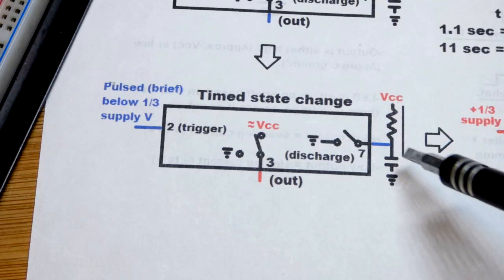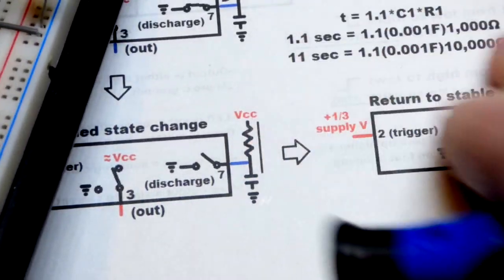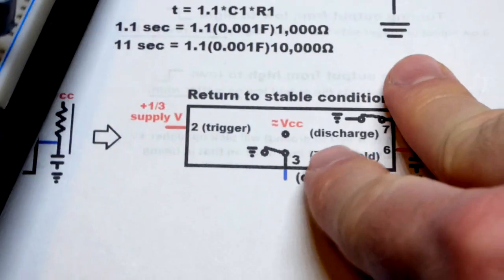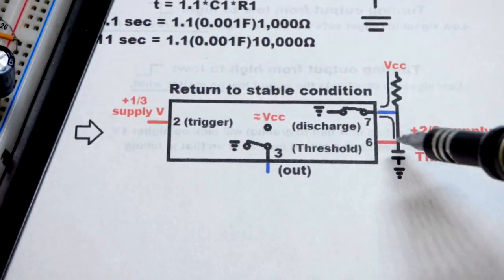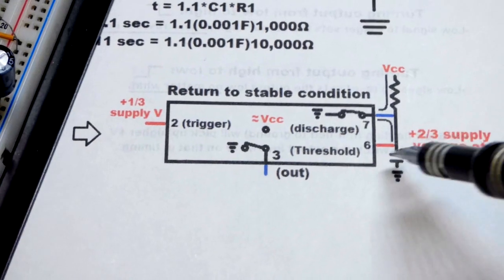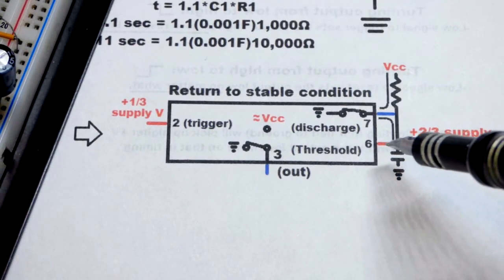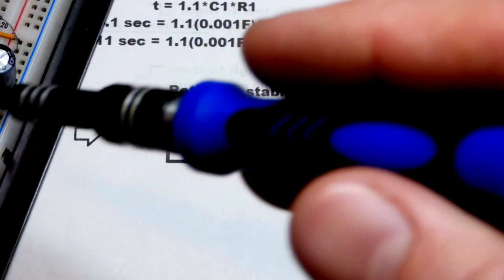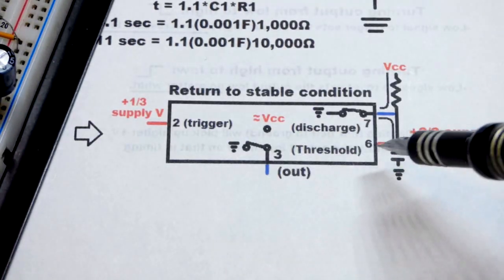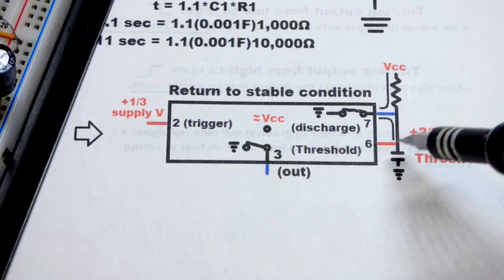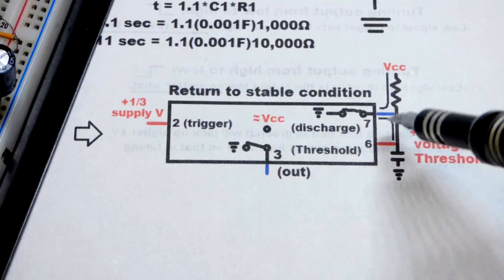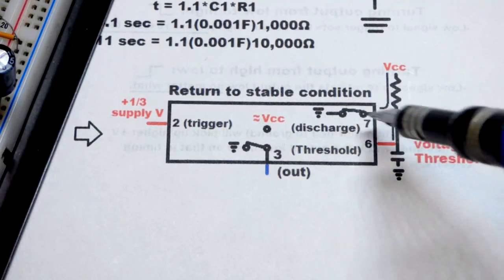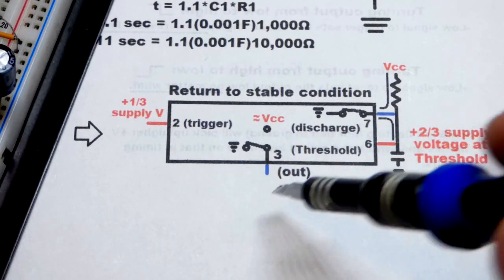Now the capacitor charges and then it charges and charges until we get to this point here where the threshold pin notices it charged to two thirds of the supply voltage. That's why the high output is not stable because once we get to two thirds of the supply voltage charging the capacitor, then it automatically discharges the capacitor at the same time setting the output low.